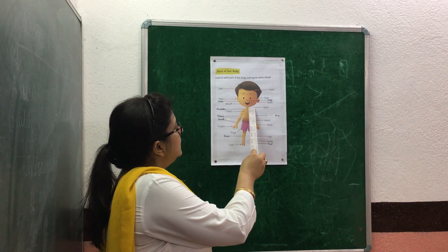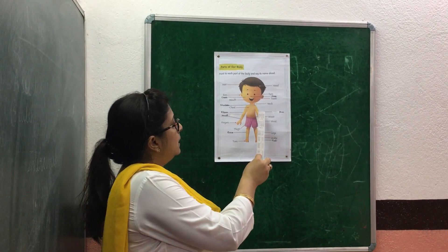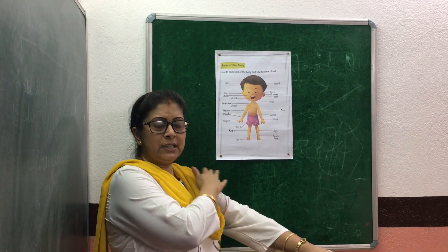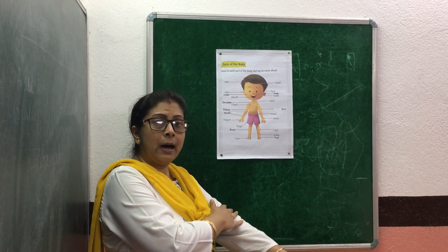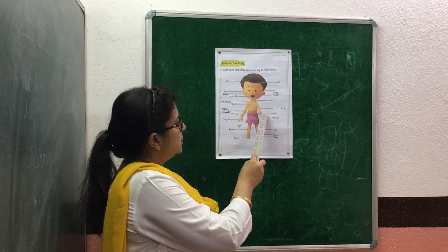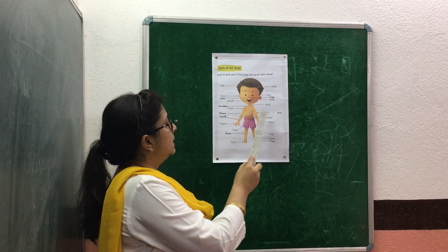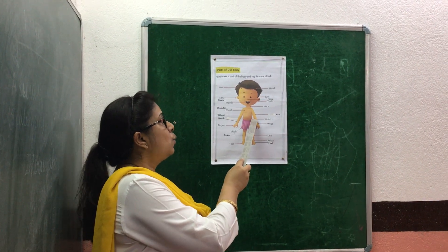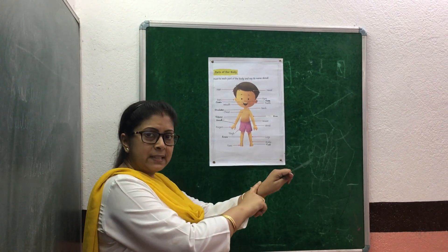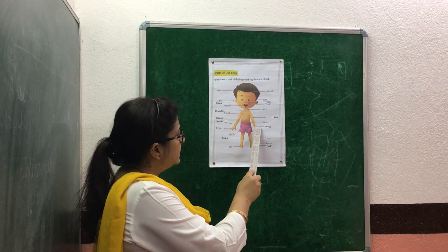This is neck. Now this portion is called arm. This is waist. And this is our wrist.